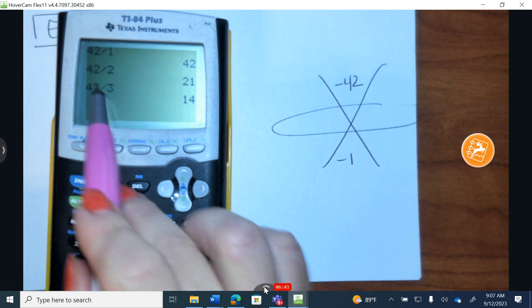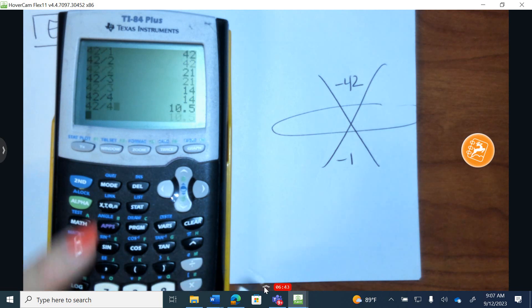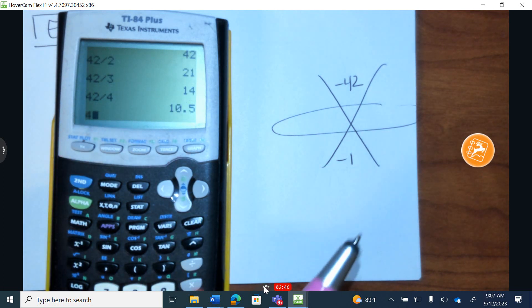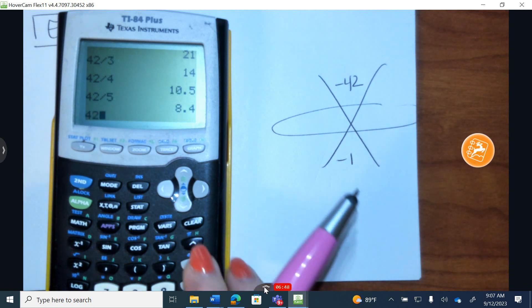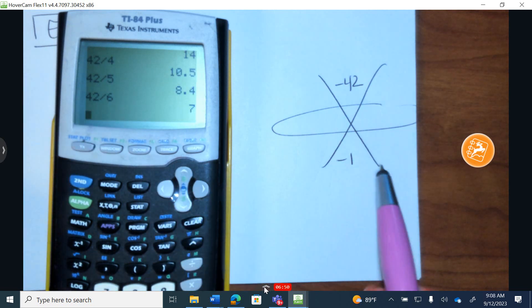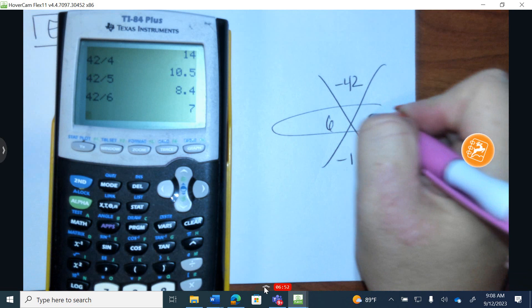Divide it by 3. 3 and 14. Now when you get a number that's a decimal, we know that's not going to work. We divide it by 5, we get a decimal. We divide it by 6. 6 and 7 is a difference of 1. So I write 6 and 7.